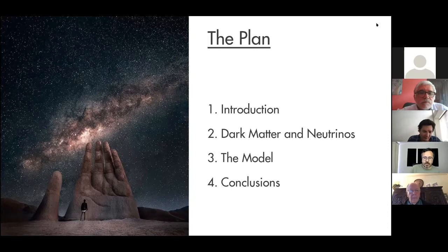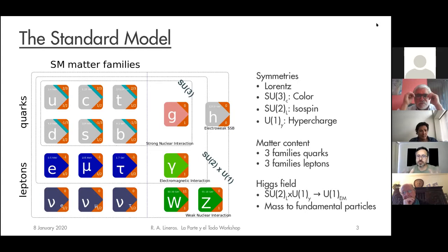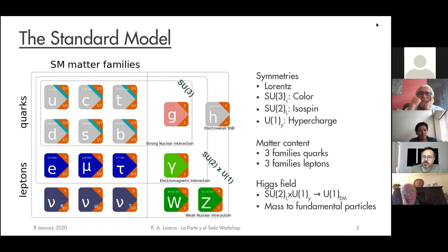Everything starts with the whole, and for particle physics the whole is the standard model. The standard model is a very strong phenomenological model based on symmetries, and what makes it interesting is its capability to make predictions observable across astroparticle physics, collider physics, and more. The basis symmetries are Lorentz symmetry and gauge symmetries related to color, isospin, and hypercharge, with three families of quarks and leptons.